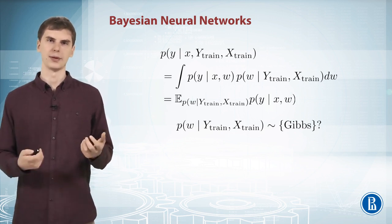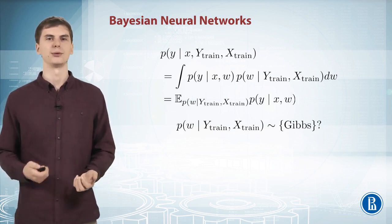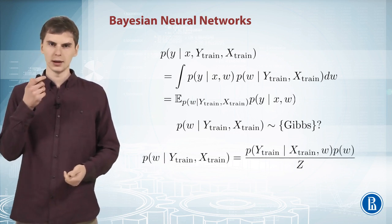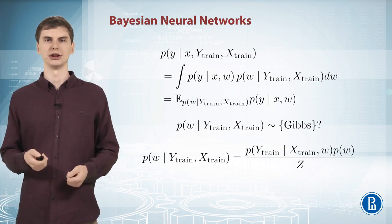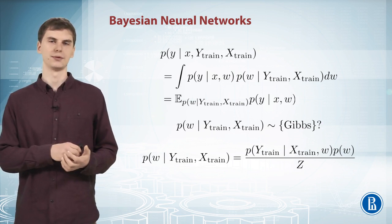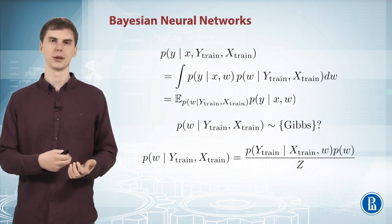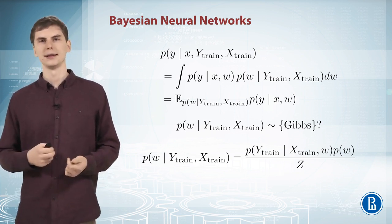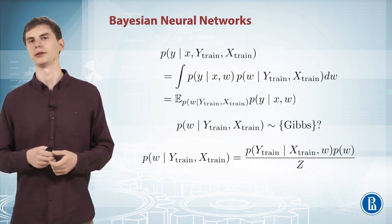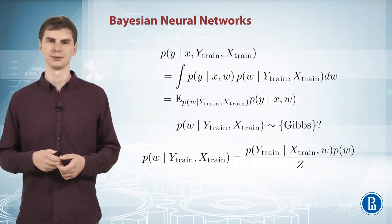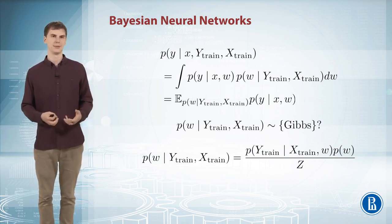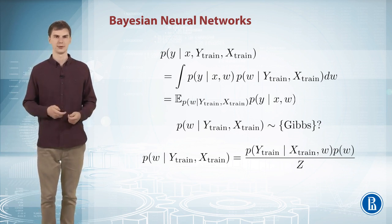And how can we sample from the posterior? Well, we know it up to normalization constant, as usually. So here this posterior distribution on w is proportional to the likelihood, so basically the prediction of neural network on the training dataset with parameters w, times the prior p of w, which you can define as you wish. For example, just a standard normal distribution. And you have to divide by a normalization constant, which you don't know, but it's okay because Gibbs sampling doesn't care.